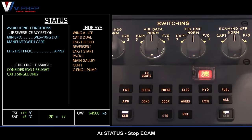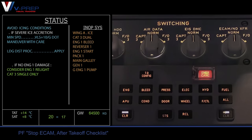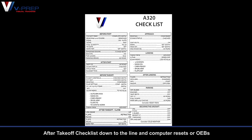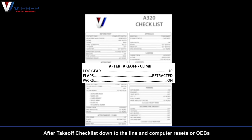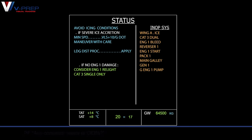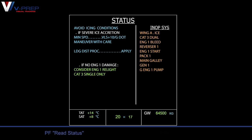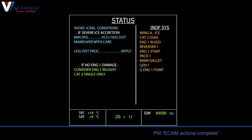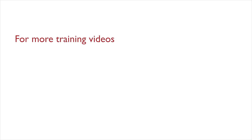At status, stop ECAM. After take-off checklist, down to the line, and computer resets or OEBs. Any computer resets or OEBs? — No computer resets or OEBs. Read status. Pilot monitoring reads the status page. ECAM actions complete.